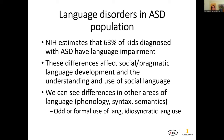Language disorders in our ASD population: NIH estimates about 63% of kids diagnosed with ASD will have language impairments. These impairments can affect social and pragmatic language development, the use and understanding of social language. With ASD kids, we can see unique differences in vocabulary, grammar, odd or formal language use, idiosyncratic language, or just difficulty using language for a variety of different purposes.